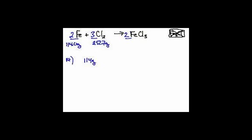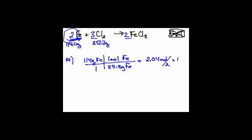I'm going to take 114 grams of Fe over 1, and then 55.8 grams of iron from the periodic table is 1 mole of iron. That comes out to be 2.04 moles. Divide by the coefficient, which in this case is a 2 from up here. So that gives us 1.02.